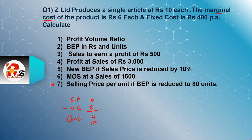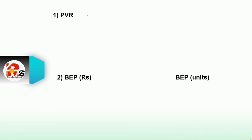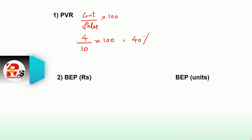We have selling price rupees 10 and variable cost rupees 6, giving contribution of rupees 4. Now we will calculate our first point, PVR. The PVR formula is: contribution divided by sales multiplied by 100. Contribution is 4, sales is 10, so 4 divided by 10 multiplied by 100 gives PVR = 40%. This whole chapter is based on PVR — if PVR is wrong, everything will be wrong.